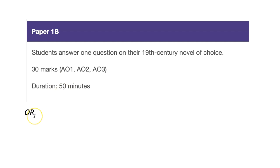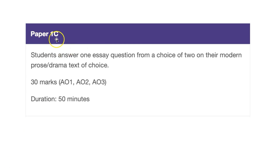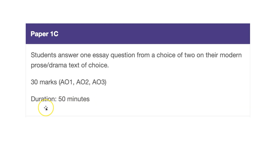Or, you can choose not to do that and choose the next option: Paper 1C, which is the modern prose or drama text of your choice. Again, worth 30 marks and it lasts for 50 minutes. You get that extra five minutes.